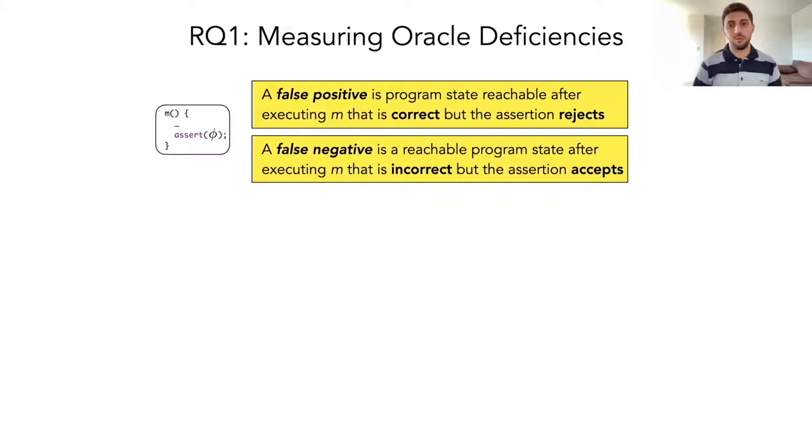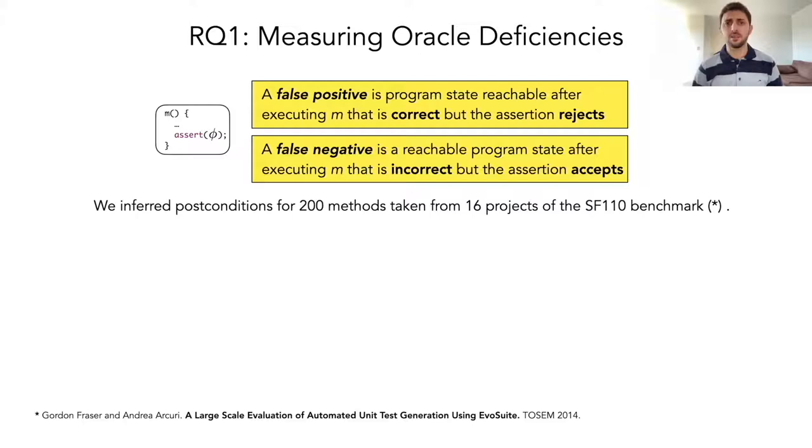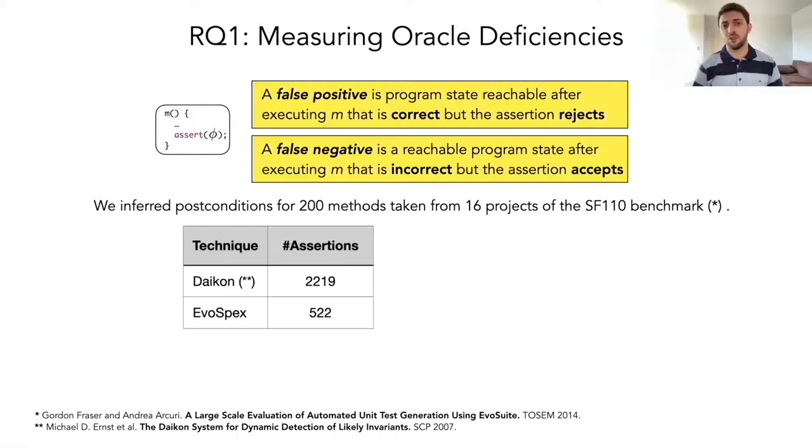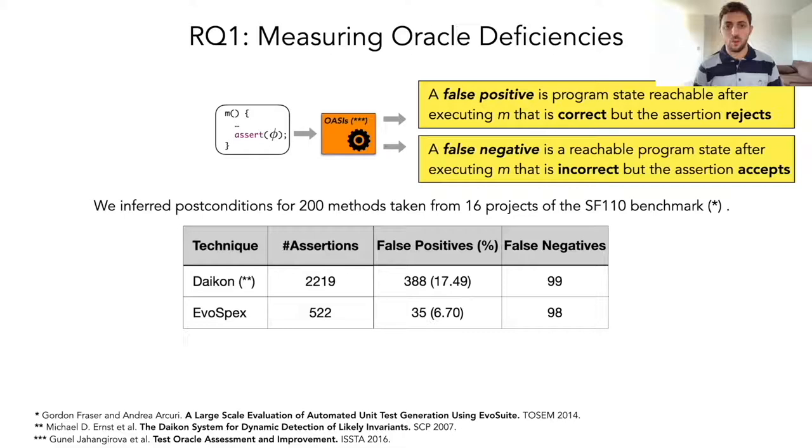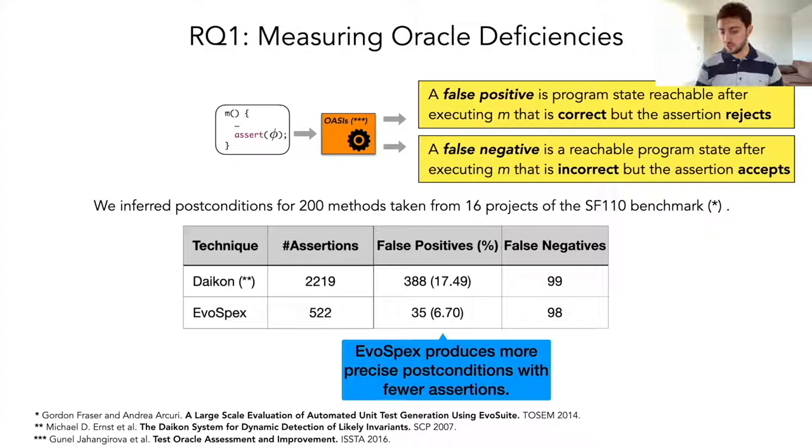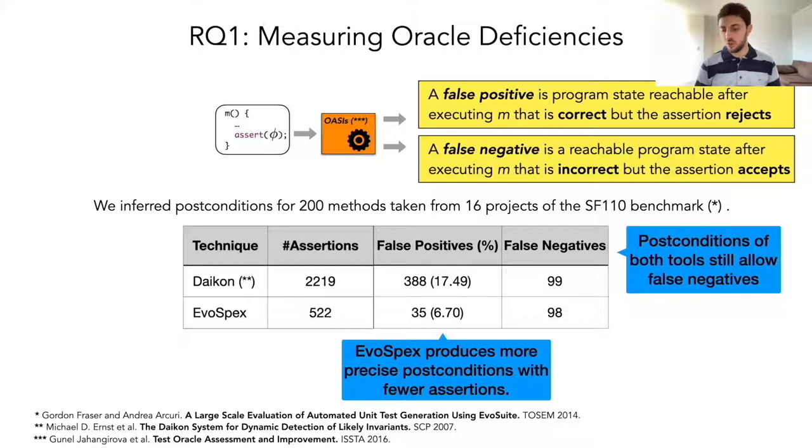What we did was to infer post-conditions for 200 methods taken from 16 projects of the SF-110 benchmark, and inferred post-conditions using our technique and the well-known invariant detector, Daikon. Then we searched for evidence of false positives or false negatives on the inferred assertions using an oracle assessor called OASIS. And these are the numbers that we found. Essentially, the takeaway here is that EvoSpex produces more precise post-conditions with fewer assertions compared with Daikon, and that the post-conditions of both tools still allow false negatives, which suggests that the post-conditions can still be improved.